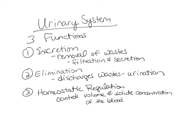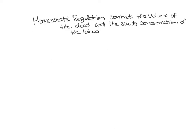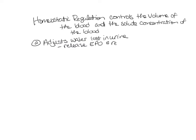I want to explain homeostatic regulation a little further, and we'll look at that on the next slide. Throughout this chapter, we'll be looking at homeostatic regulation. First, homeostatic regulation means that the kidneys adjust the volume of water lost in the urine. The kidney can do this by releasing two hormones called erythropoietin and renin, which we will talk about later in the chapter.